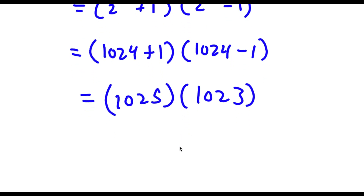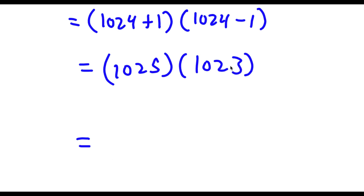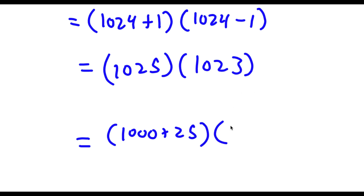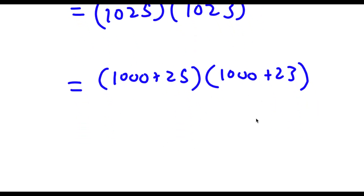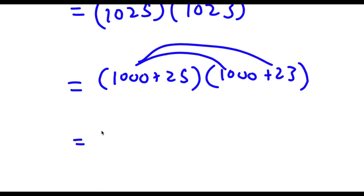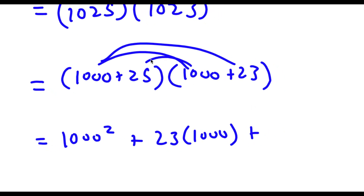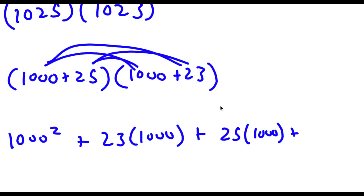So now let's go ahead and evaluate this. 1,025 we can rewrite as 1,000 plus 25, and 1,023 we can rewrite as 1,023. So now we have 1,025 times 1,023. To solve this I'm going to start by distributing the 1,000. So now I have 1,000 squared plus 23 times 1,000, plus 25 times 1,000, plus 25 times 1,023.